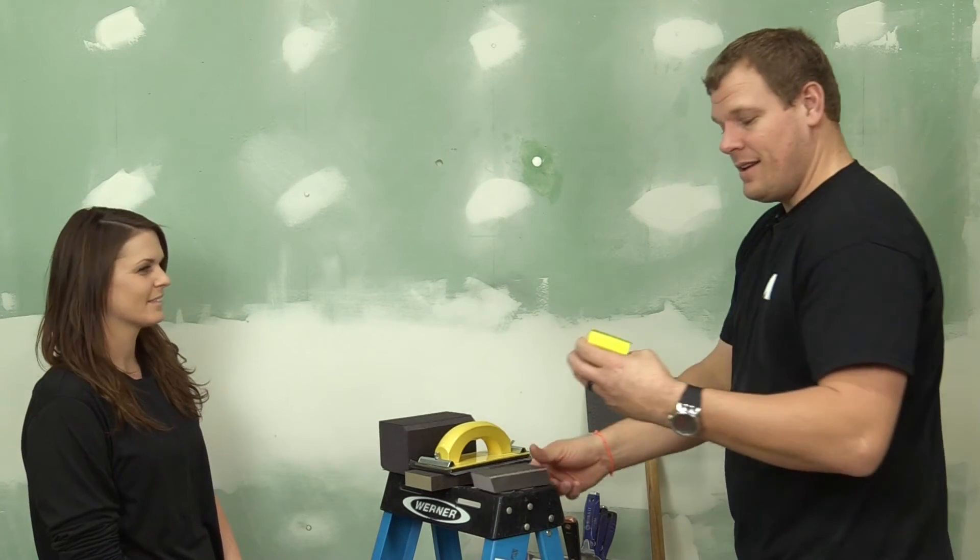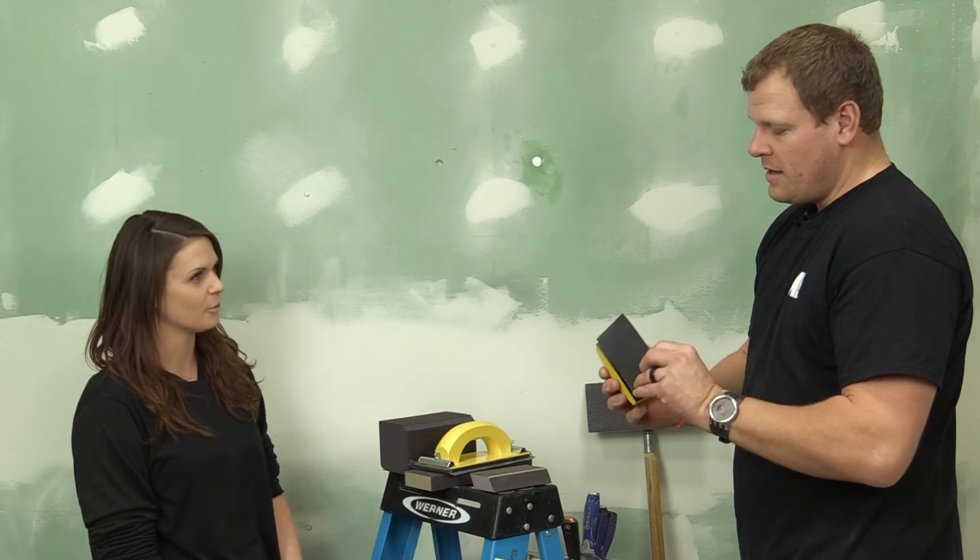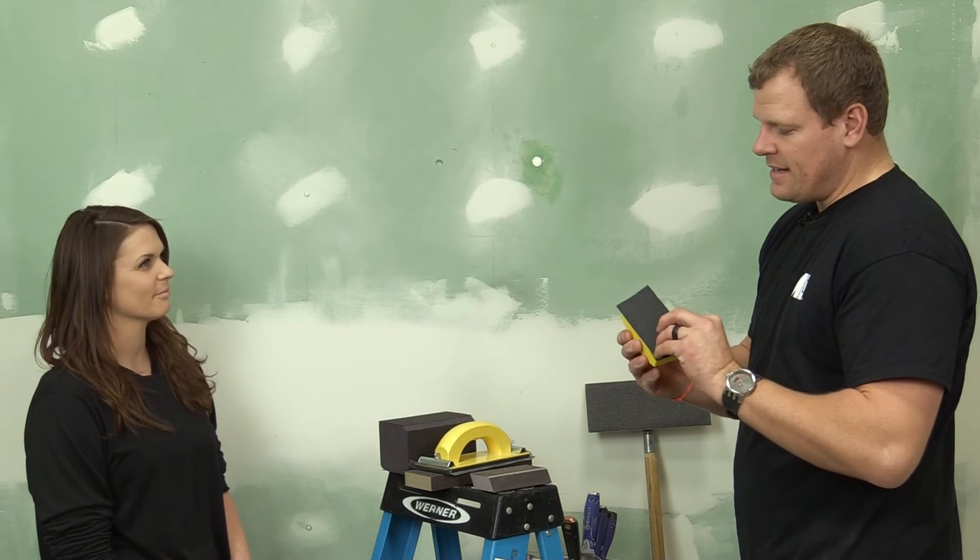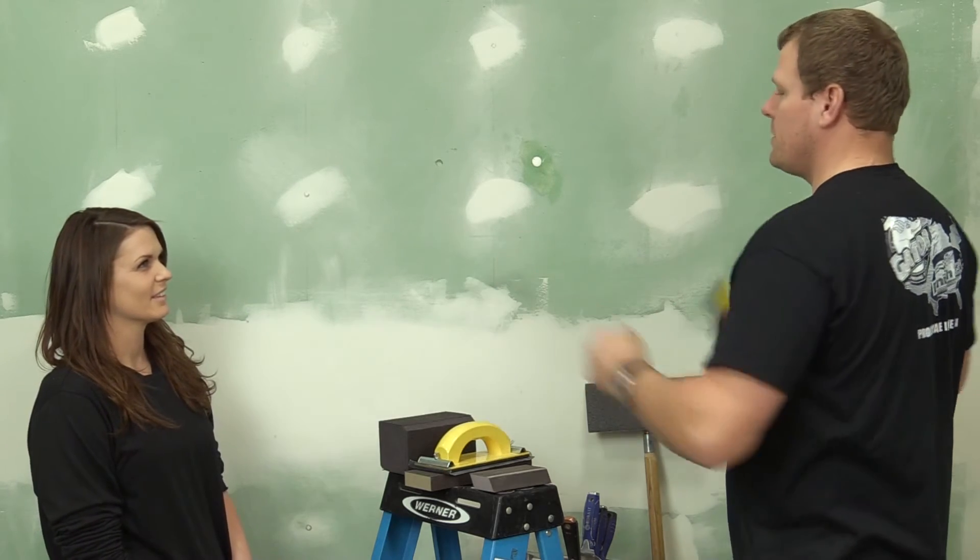The next one would be this little palm sander. It's got a hook and loop system. If you've got 50 sheets, it's nice to have that—you can just peel it off and put it back on. You can blaze through three walls like this in no time.